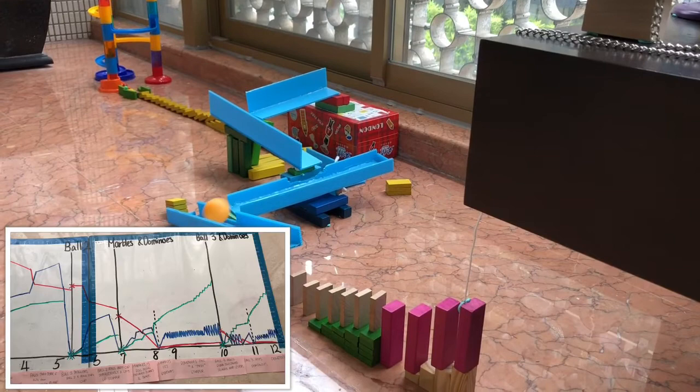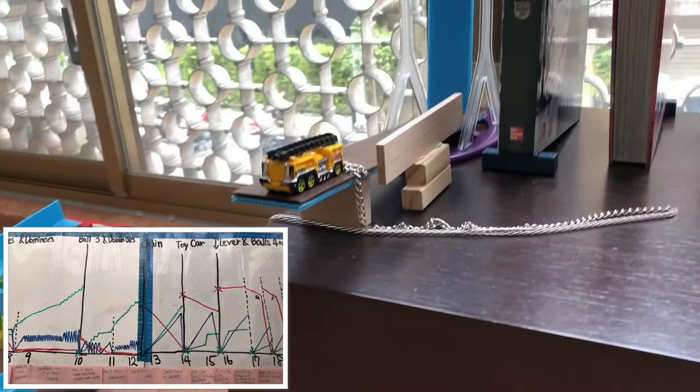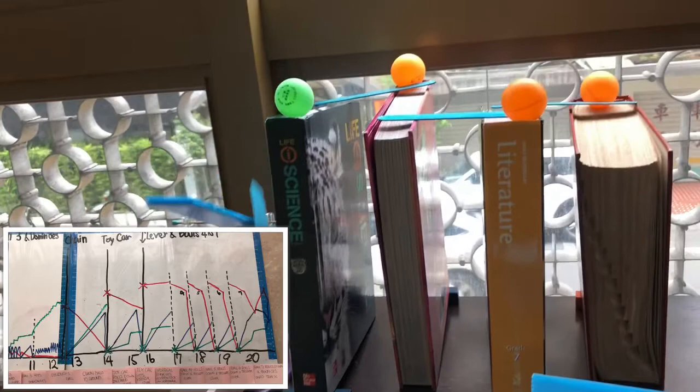Ball three hits the second set of dominoes and the dominoes fall. KE fluctuates as thermal energy increases as each domino collides with the domino in front of it. The metal chain falls to the ground causing an increase in KE and TE and a decrease in GPE. The car then slides down an incline plane. Its KE increases while GPE decreases. Its thermal energy spikes up when it hits the vertical lever. Its KE drops to zero when it stops moving.